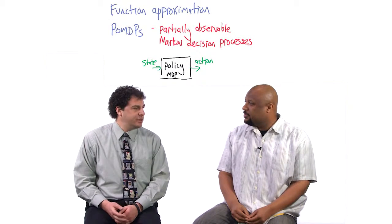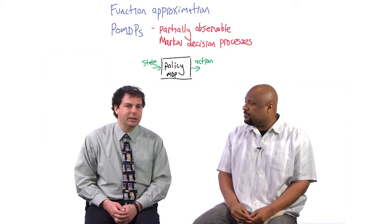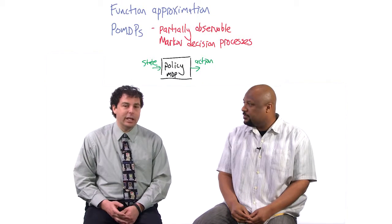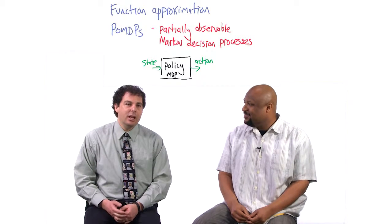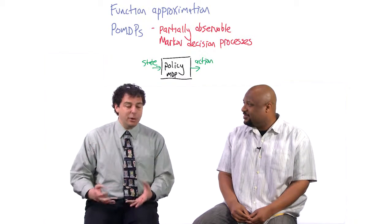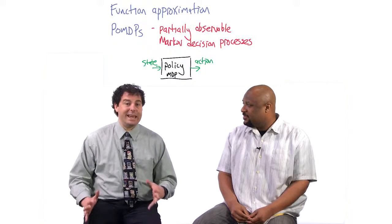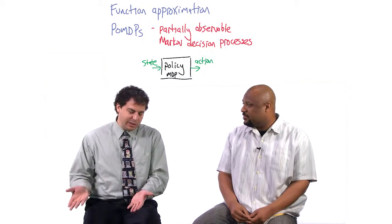So partially observable Markov decision processes, right? So when we talked about without the PO, MDP, yeah, all right. So when you talk about MDPs, the agent always has complete information about what the current state is, right? That's the state is what you're using to decide what to do. The policy maps state to action.